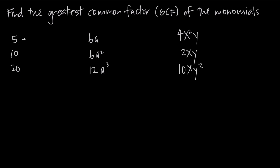Five broken down into its prime factors is just going to be five — five is already a prime number, so the only factor of five is five. Ten broken down into its prime factors is going to be five and two.